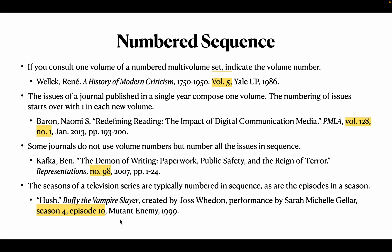The seasons of a television series are also typically numbered in sequence. For example, 'Hush' is season 4, episode 10. Cite it as: first the name of the episode, then the name of the series, then created by, performance by, season 4, episode 10, then the name of the production company.